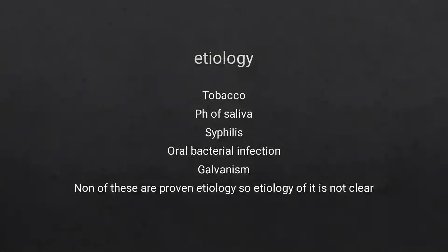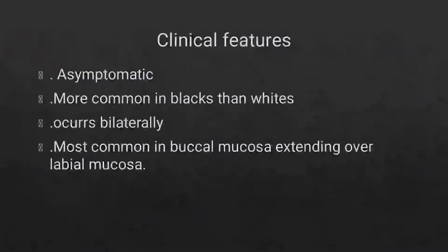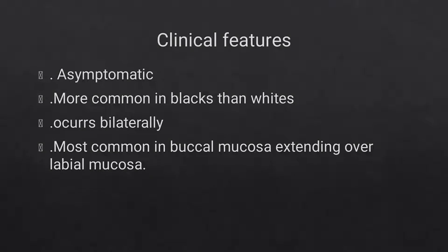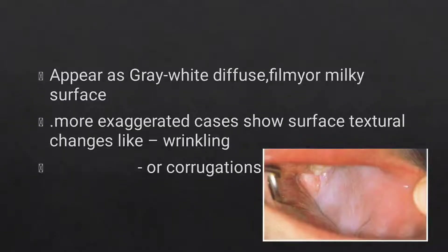There is no clear etiology for leukoedema. The clinical features: leukoedema is asymptomatic, more common in black than white, occurs bilaterally, most common in buccal mucosa and extends over the labial mucosa. It appears as a gray-white diffuse filmy or milky surface, as you can see in this diagram.